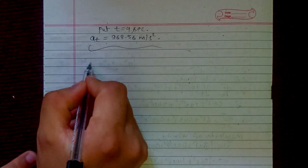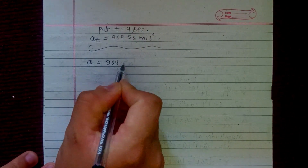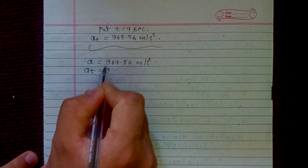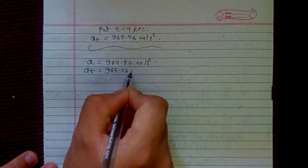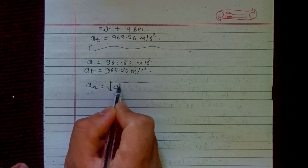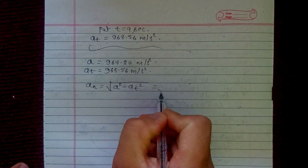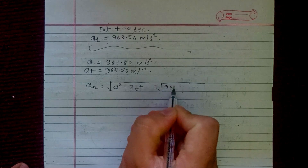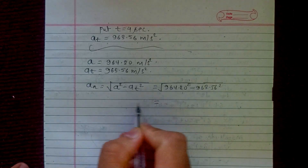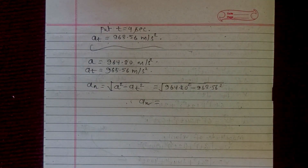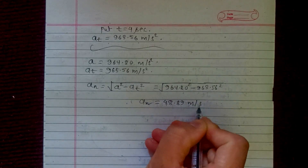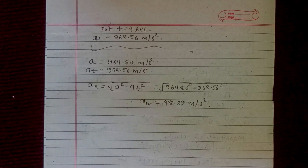The magnitude of acceleration is 964.80 m/s² and the tangential component of acceleration is 963.56 m/s². The normal component of acceleration is aₙ = √(a² − aₜ²) = √(964.80² − 963.56²), which gives aₙ = 48.89 m/s².